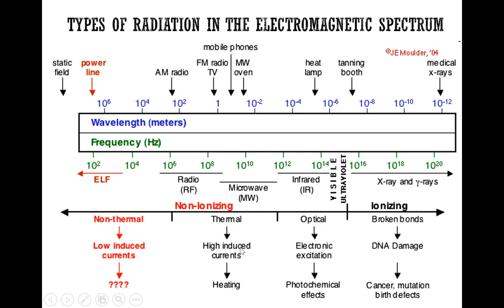In the center of the non-ionizing region, we have radiation that is thermal in nature and releases heat. Examples include radio frequency from AM and FM radio antennas, TV signals that travel through air, signals in mobile phones, and microwaves. These are all examples of non-ionizing radiation that produces thermal heat.